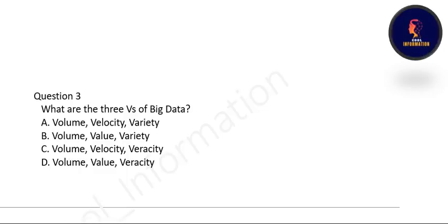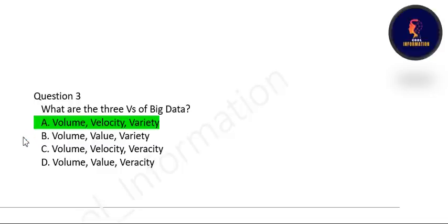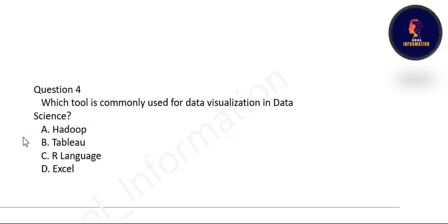Question 2: What are the three V's of big data? Very important question from Unit 1. The three V's of big data are volume, velocity, and variety. Option A is correct.